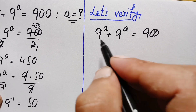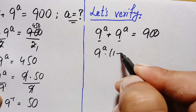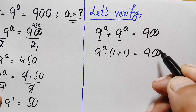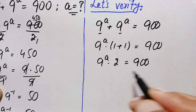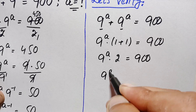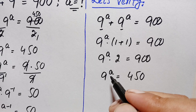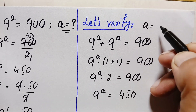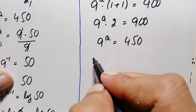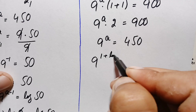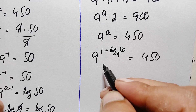On the left hand side, 9^a is common, so we factor it out: 9^a times (1+1) = 900, which is 9^a times 2 = 900. Dividing both sides by 2, we get 9^a = 450. We substitute a = 1 + log_9(50), giving 9^(1 + log_9(50)) = 450.